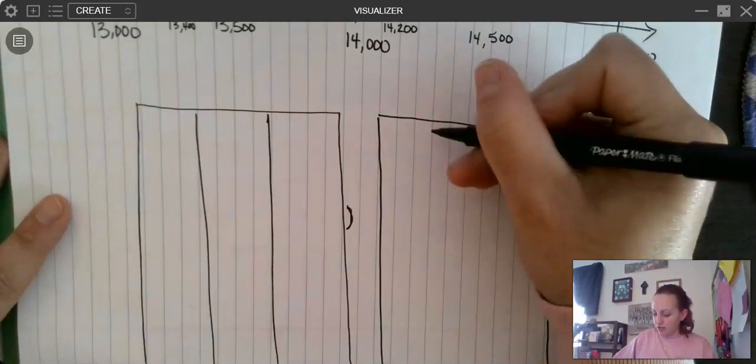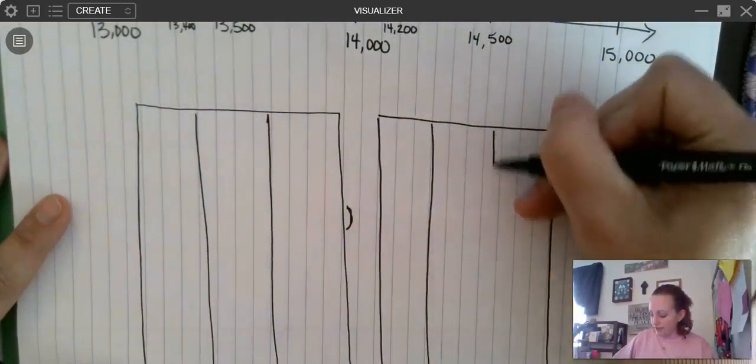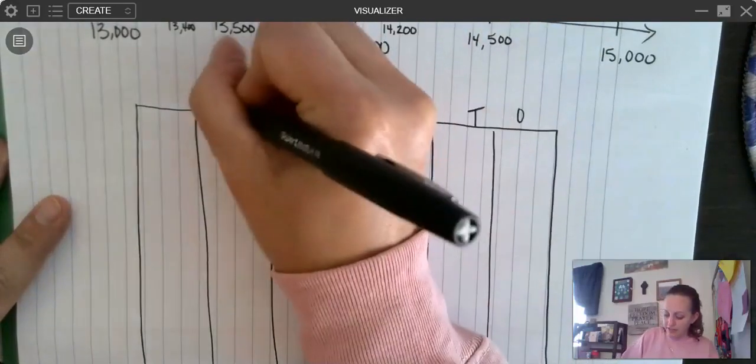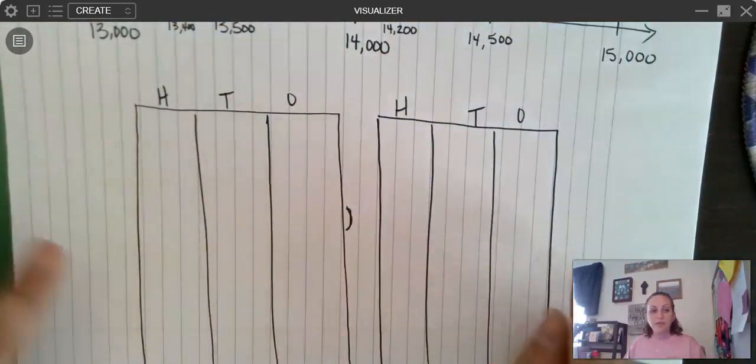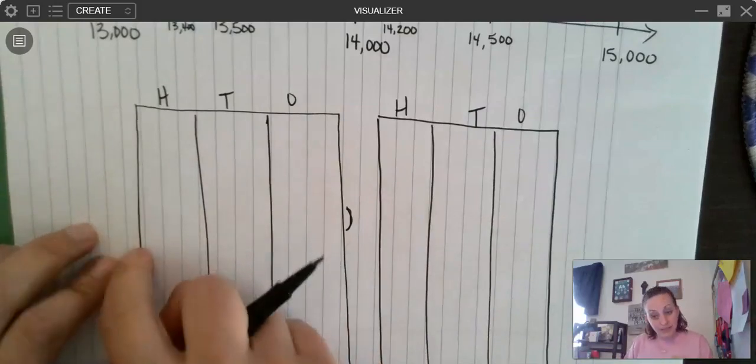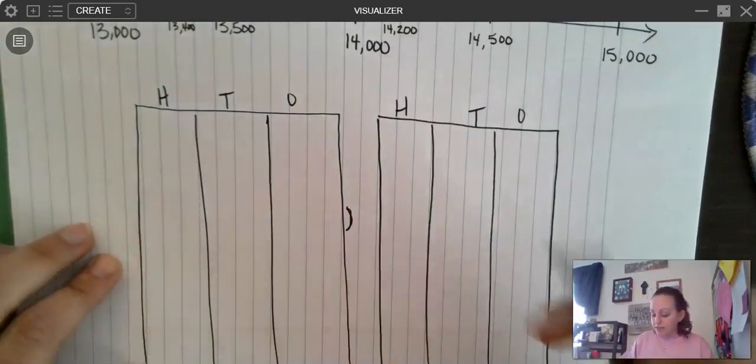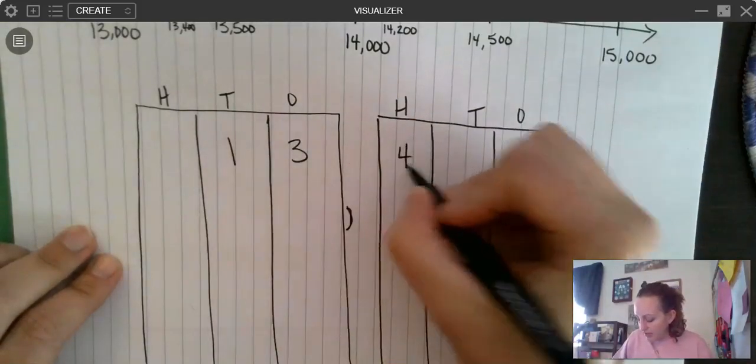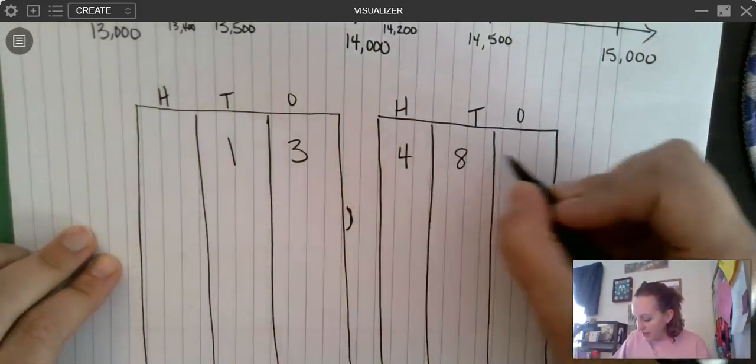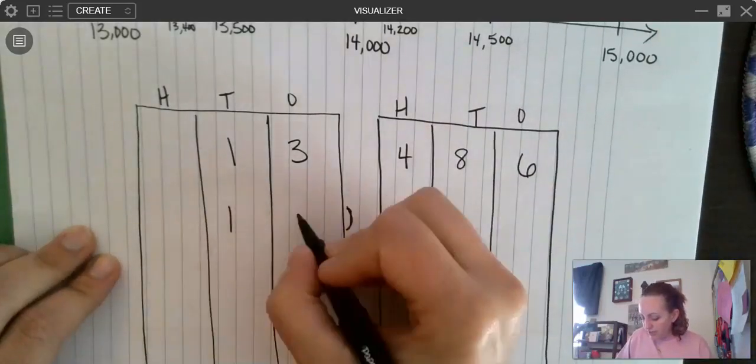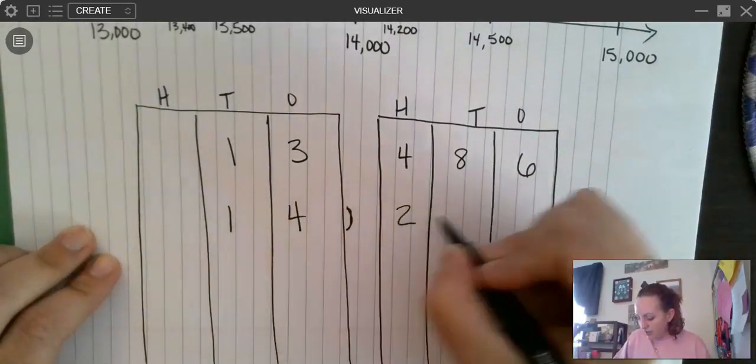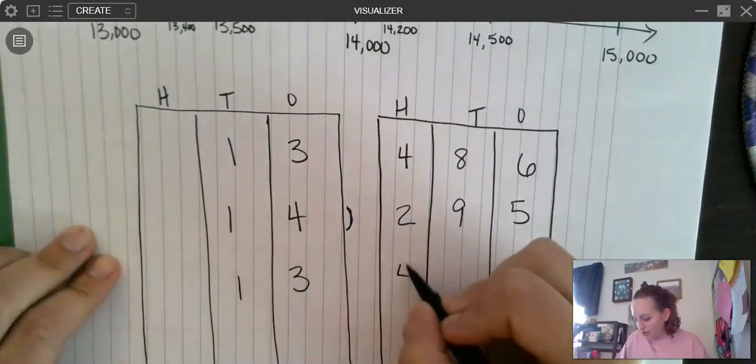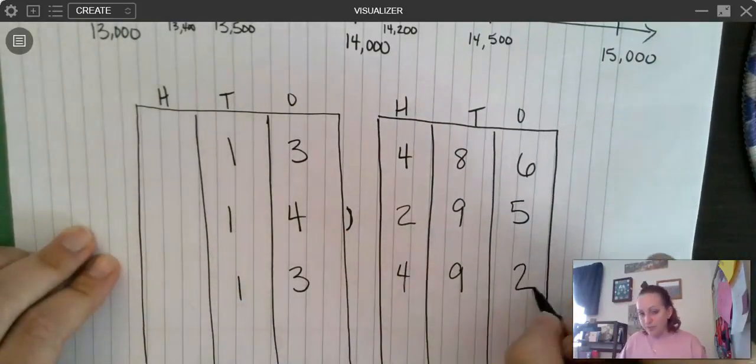And I have my hundreds, tens, and ones in each house, right? Okay. So ones, tens, hundreds, ones, tens, hundreds. And remember, we always start with a higher place value when we're comparing. So I'm going to take my three numbers and I'm going to write them into my place value chart. We have 14,295 and 13,492. Okay.